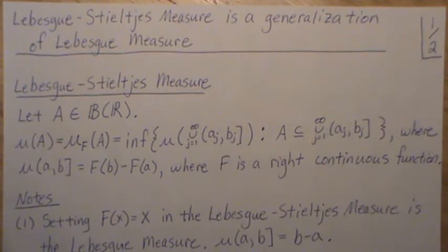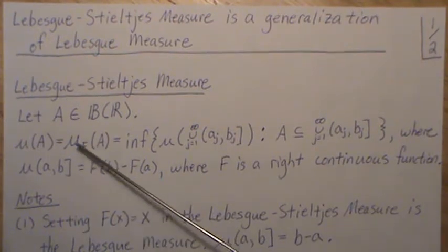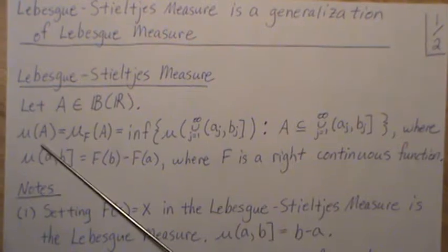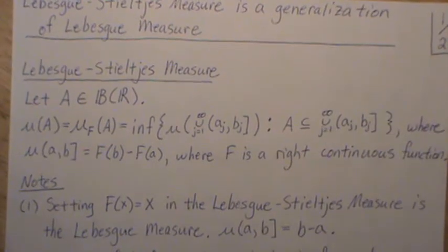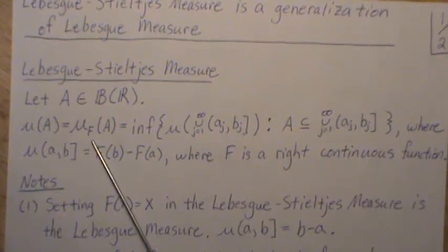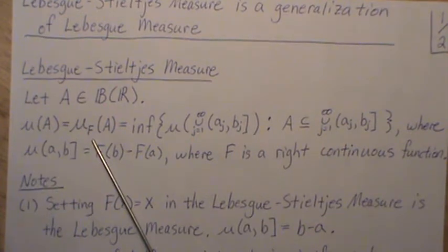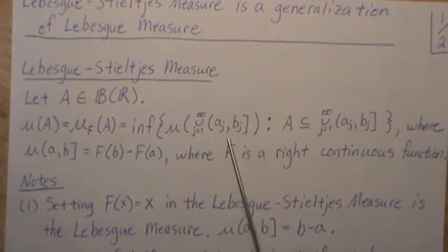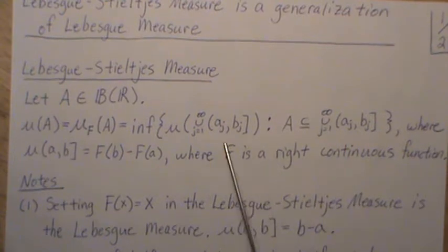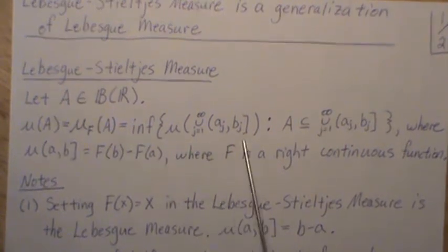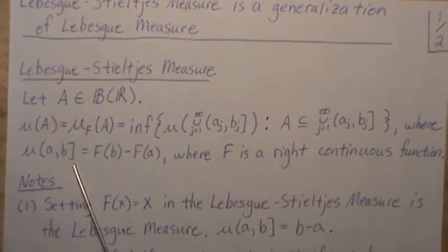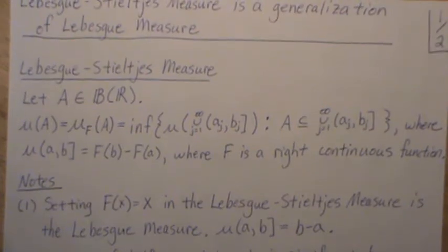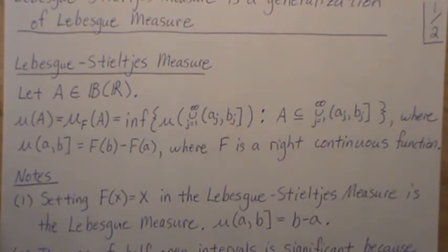As a reminder, the Lebesgue-Stieltjes measure is defined like this. Let A be an element of the Borel set, and then μ(A)—this is the Lebesgue-Stieltjes measure, sometimes you use a subscript F because it depends upon the distribution function—is the infimum of the union of all these right semi-closed intervals such that A is a subset, and you take the infimum of that set that just covers A, where μ(a,b] = F(b) - F(a), where F is a right continuous function.